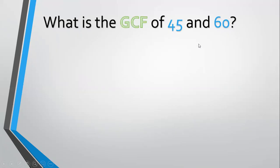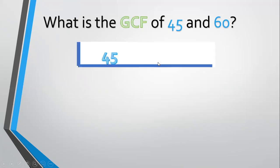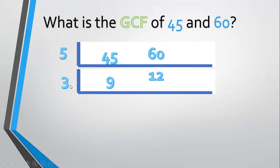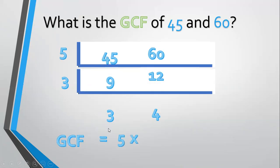Another example, what is the GCF of 45 and 60? Align 45 and 60. Divide by a prime common factor, 5. 45 divided by 5 equals 9. 60 divided by 5 equals 12. Divide by a prime common factor, 3. 9 divided by 3 equals 3. 12 divided by 3 equals 4. 3 and 4 have no common factor. So the GCF equals 5 times 3 equals 15.